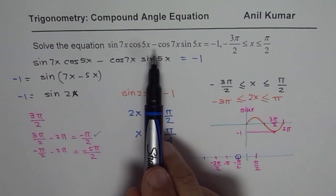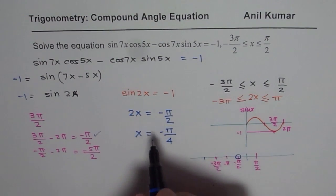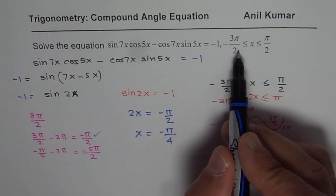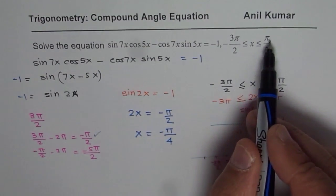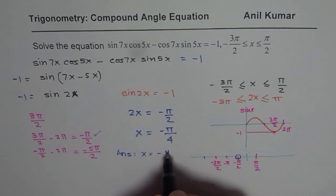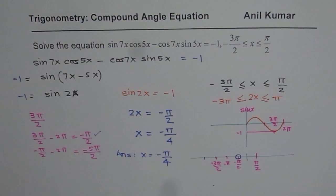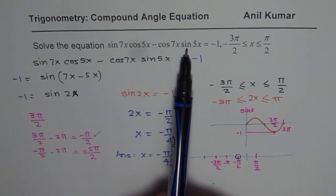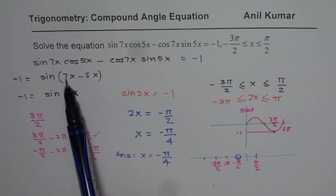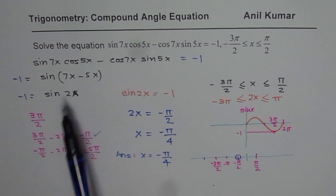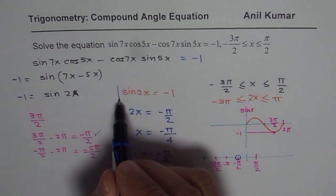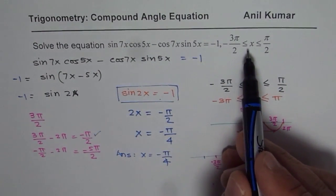This particular equation, sine 7x cos 5x minus cos 7x sine 5x equals to minus 1 is true for x equals to minus pi by 4 in the given domain. Our solution here is x is equals to minus pi by 4. I hope you understand the method. First, what we did was, we simplified the given expression using the compound angle formula. The expression on our left side is sine 7x minus 5x which is sine 2x. That sine 2x is equal to minus 1.